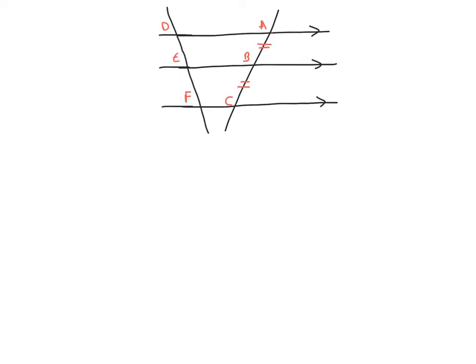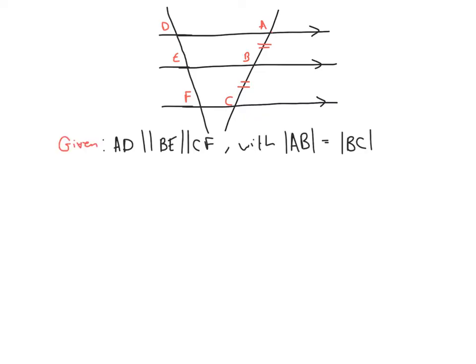We then draw another transversal and label those points D, E and F. So we're given that line AD is parallel to line BE, which is parallel to line CF — those are our three parallel lines. We're also given that the distance between A and B equals the distance between B and C.